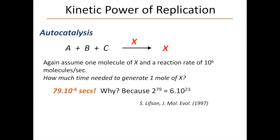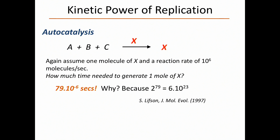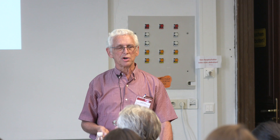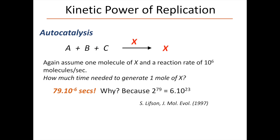The answer is 79 microseconds — instead of 20 billion years. Why? Because each replication takes a microsecond — 10 to the minus 6 seconds — and we're doing 79 replications: 79 times 10 to the minus 6 is 79 microseconds. That example is a little artificial starting with one molecule, but it illustrates the profound power of autocatalysis versus catalysis: 20 billion years versus 79 microseconds — a ten-thousandth of a second. That is amazing. And here is hidden life's secret.